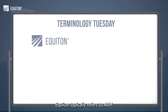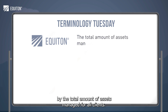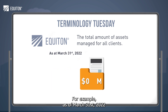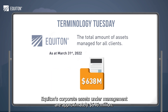Equiton typically refers to AUM by the total amount of assets managed for all clients. For example, as of March 31, 2022, Equiton's corporate assets under management are approximately $646 million.